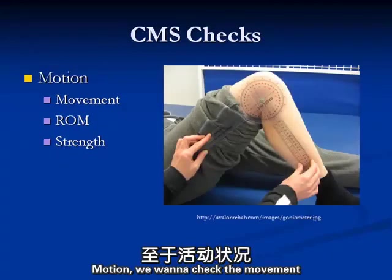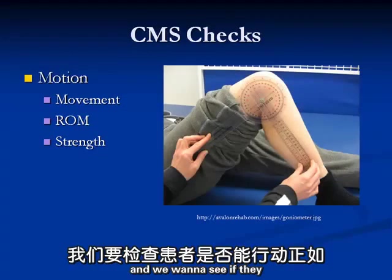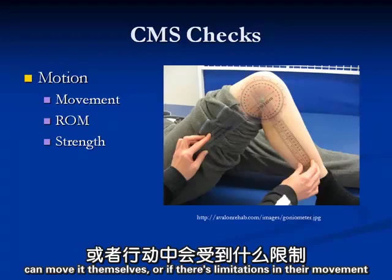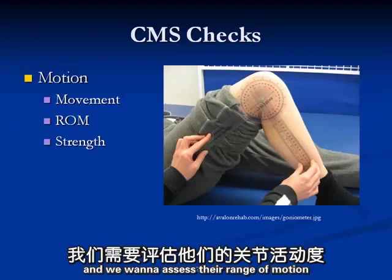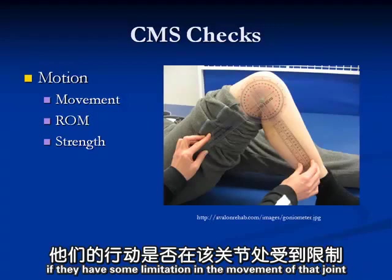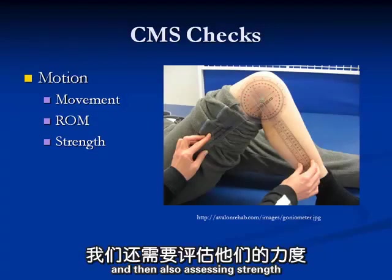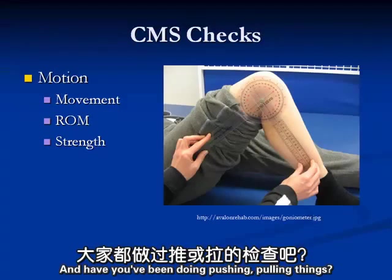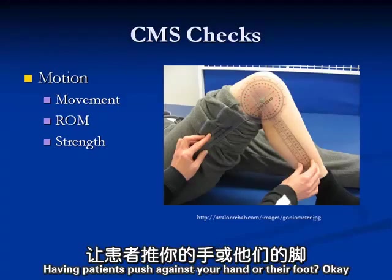Motion: we want to check the movement and see if they can move it themselves, or if there are limitations. We assess their range of motion - this is not doing exercises on them, this is assessing to see if they have some limitation in the movement of that joint. We also assess strength - having patients push against your hand, or push or pull with their foot.